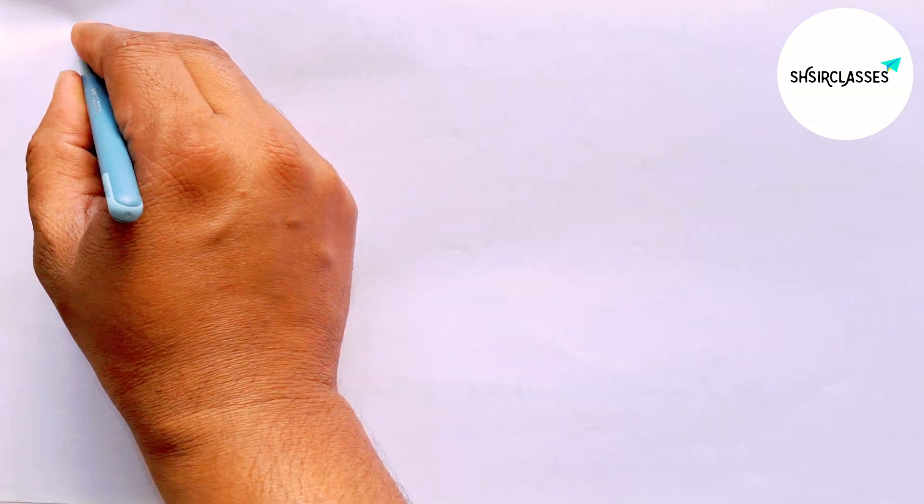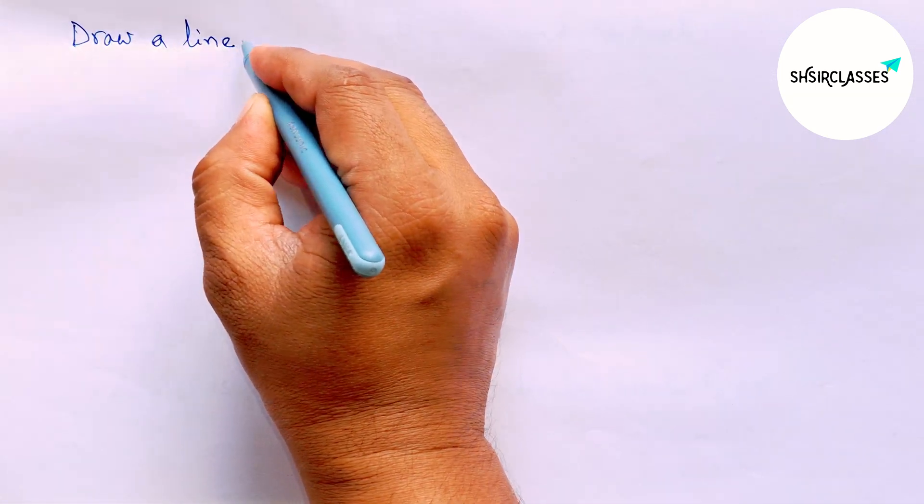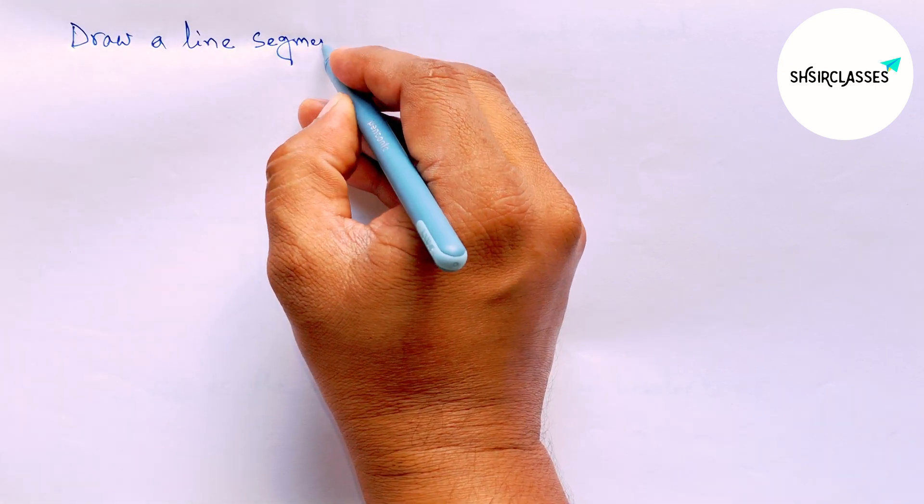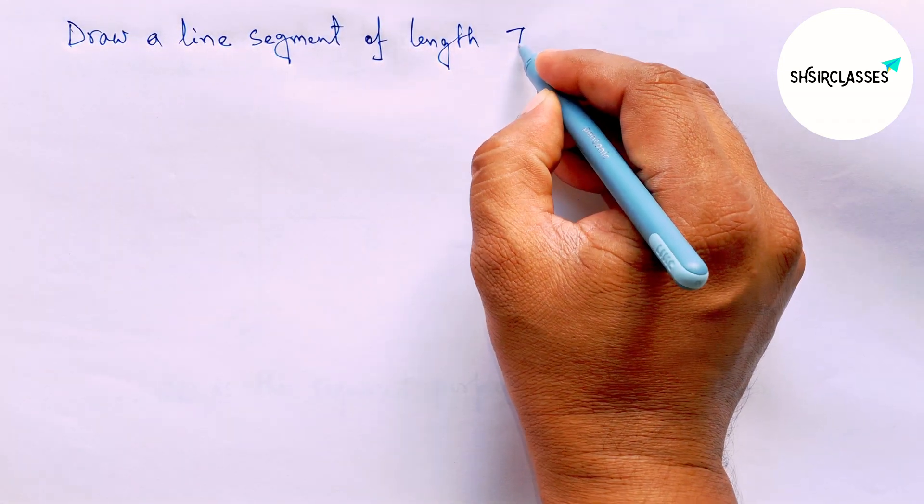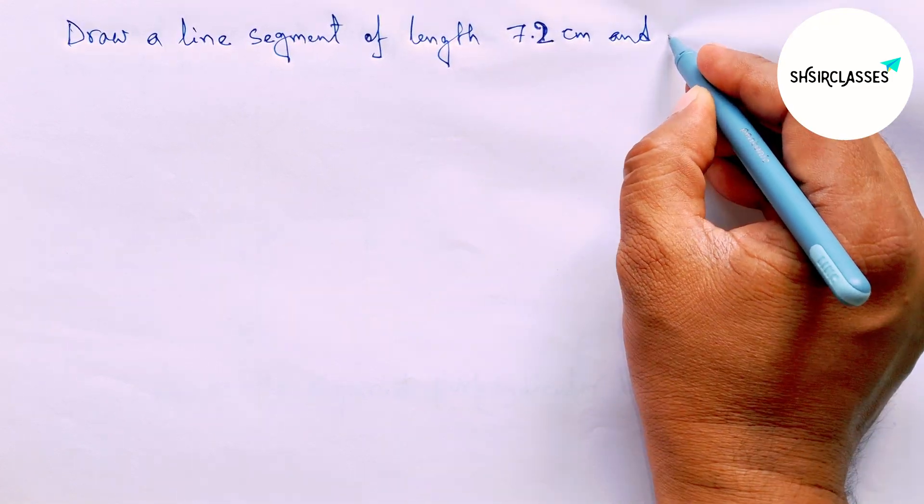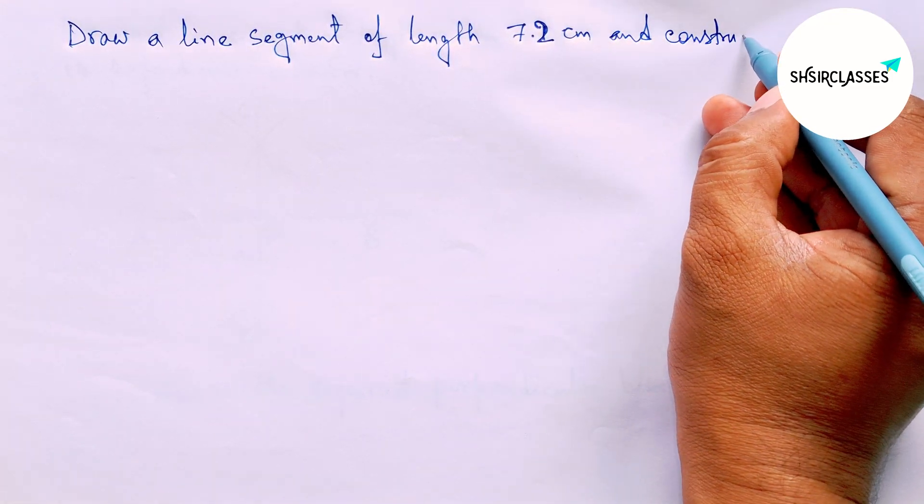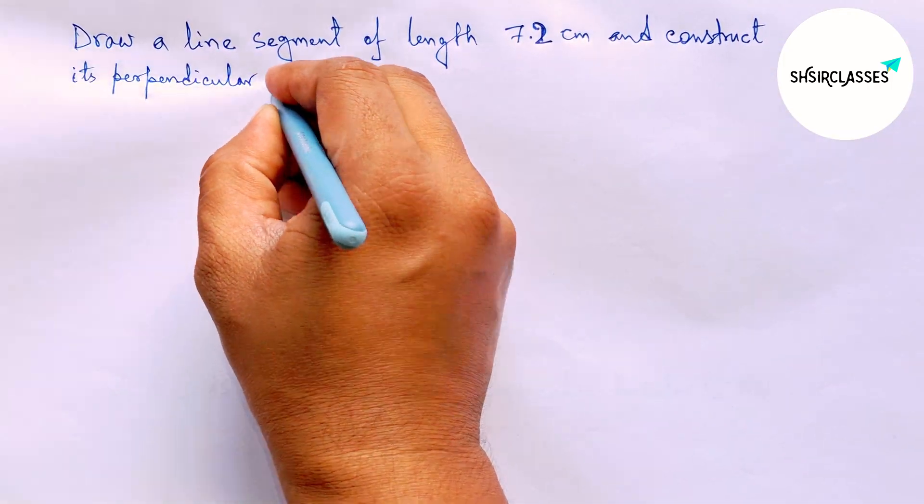Hi everyone, welcome to SS Classes. In this video, we'll draw a line segment of length 7.2 centimeters and construct its perpendicular bisector in an easy way. Please watch the video till the end.